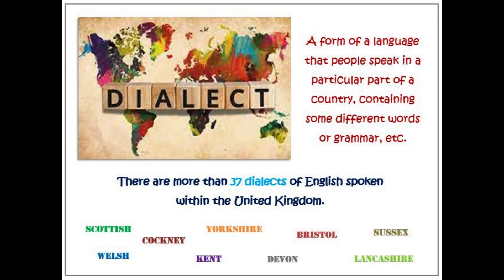Now, let's talk about dialect. Dialect is a form of a language that people speak in a particular part of a country, containing some different words or grammar. Remember, there are more than 37 dialects of English spoken within the United Kingdom alone. Some of them include the Scottish dialect, the Cockney dialect, the Yorkshire dialect, the Kent dialect, the Welsh dialect, the Bristle dialect, the Devon dialect, the Sussex dialect, and the Lancashire dialect. The best example of dialect in a Pakistani context is a Pathan person speaking Urdu — he has a Pakistani accent but he has a Pashto dialect.